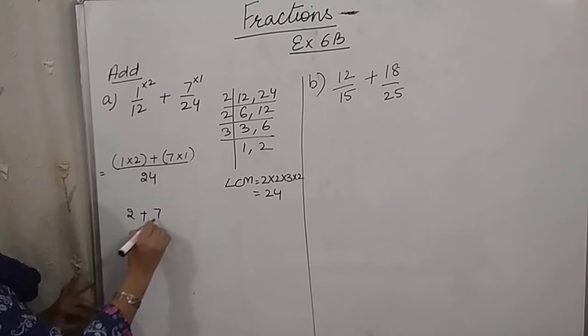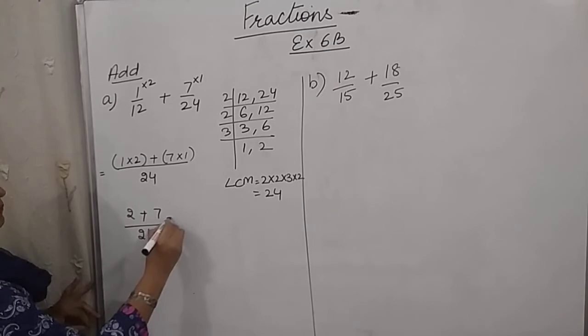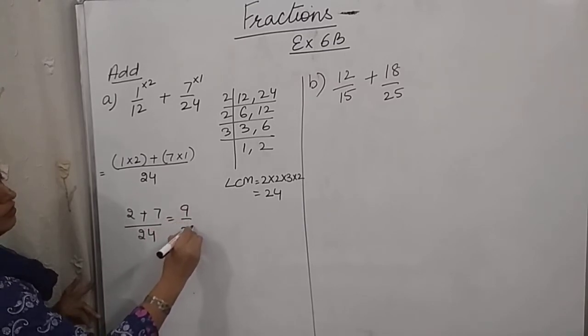7 into 1 is 7 upon 24. Denominator remains the same. And this becomes 9 by 24.